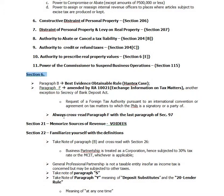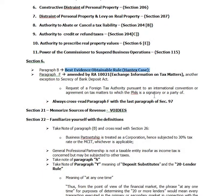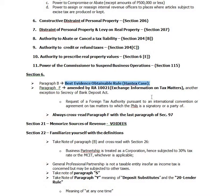Now we go to Section 6 of the NIRC. Remember Paragraph B thereof, the Best Evidence Obtainable Rule — the Hantex case. In the Hantex case, there's this guy from the BIR, the Bureau of Customs, and the whistleblower. What the BIR provided at the time in the prosecution of the case were just photocopies of the documents used to prosecute the taxpayer.